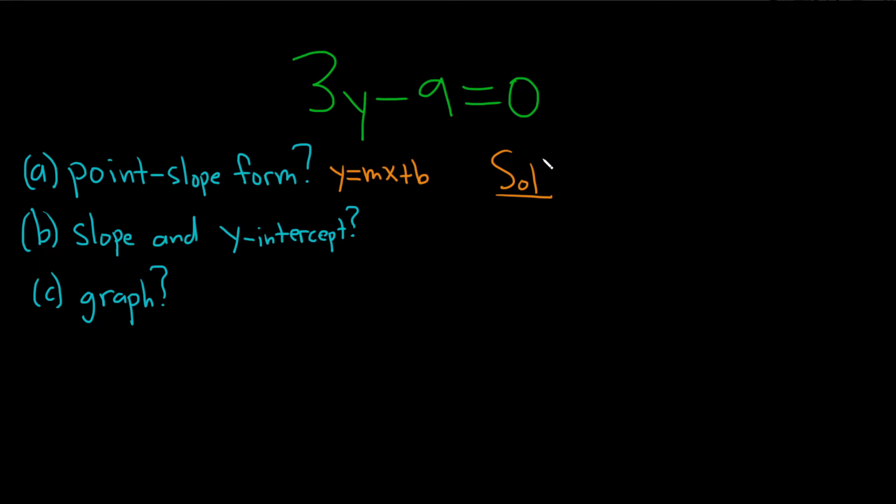Solution. I'm going to write down the original question again, so we have 3y minus 9 equals 0. Part A wants us to write it in this way, so basically that means we have to solve for y.